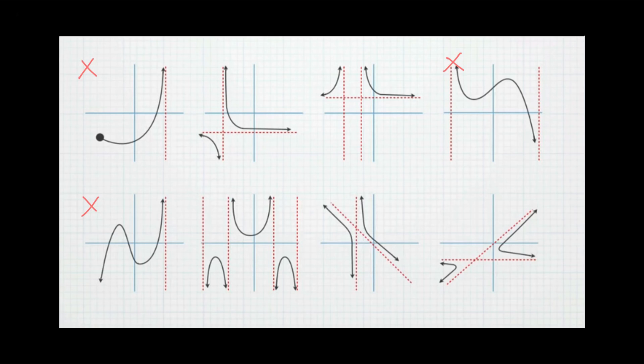In order for an infinite discontinuity to exist, there has to be at least two separate pieces of the graph, one on each side of the asymptote.